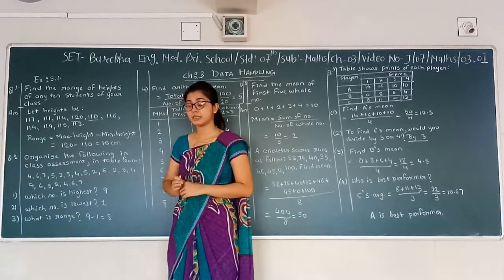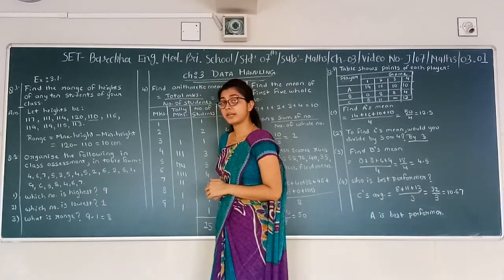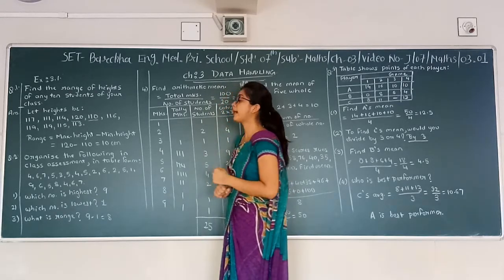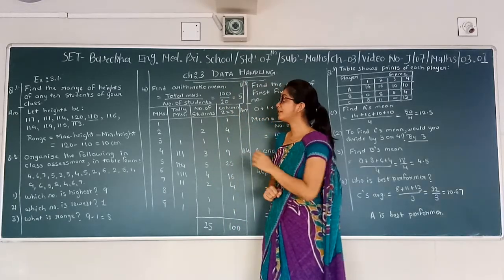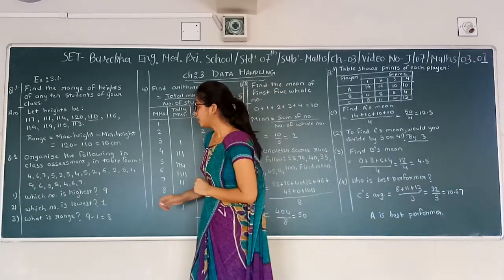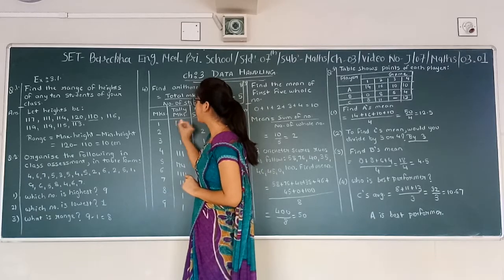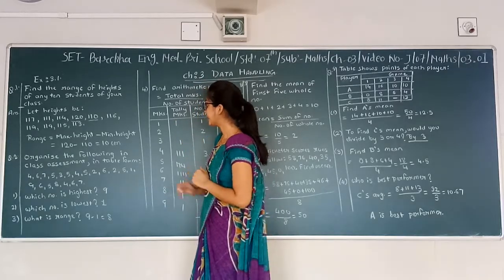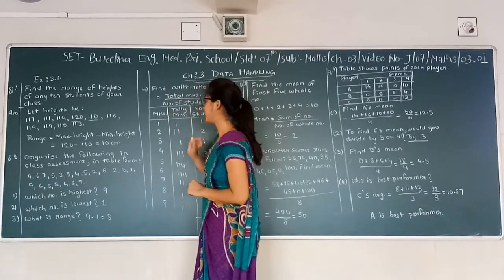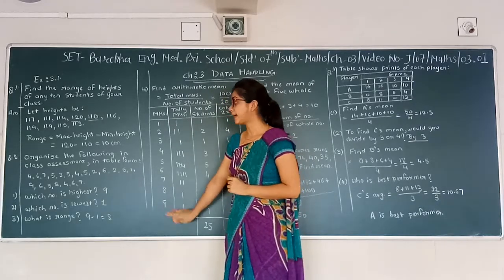Question number 2: organize the following class assessment marks in table form. We have certain marks and need to arrange them in a table. We need to identify the highest number, lowest number, range, and arithmetic mean. First we write the numbers in table form using tally marks. We have marks ranging from 1 to 9. The number 1 appears only once, so we put one tally mark. The number 2 appears twice, so we put two tally marks.